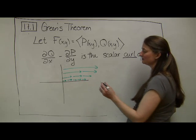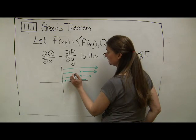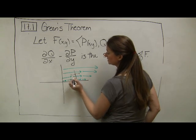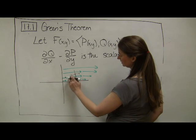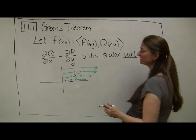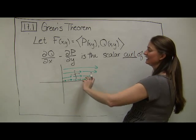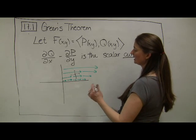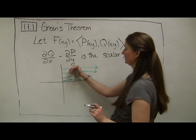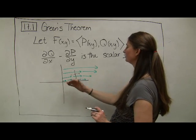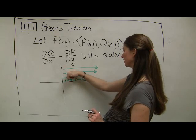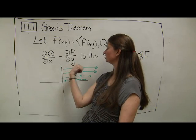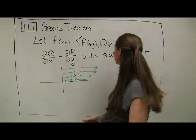And really what it's measuring is if I put a pinwheel down into this vector field, and I want to know how would this pinwheel spin? Asking how this pinwheel would spin is exactly asking what the scalar curl of F is. If my pinwheel spins in a clockwise direction, then our scalar curl is positive. If our pinwheel spins in a counterclockwise direction, then our scalar curl is positive. If our pinwheel spins in the opposite direction, then our scalar curl is negative. This is something known as the right-hand rule.